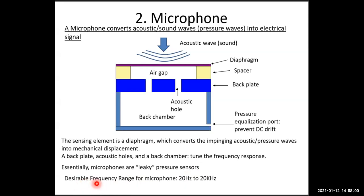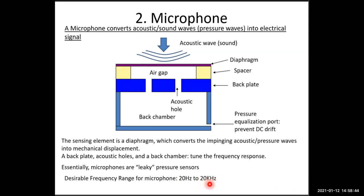The desirable frequency range for microphones is from 20 Hz to 20 kHz, because that is the frequency range of audible sound. Sound with frequency below 20 Hz is called infrasound, and sound with frequency above 20 kHz is called ultrasound. Human beings typically cannot hear infrasound or ultrasound.